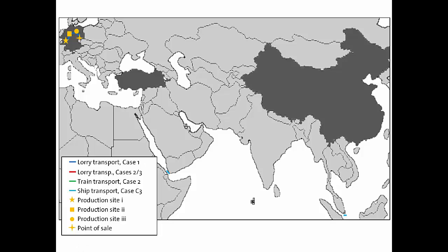In case two, the life cycle begins in China with granulate production. These granulates are transported by train to Turkey, where the plastic granulates are made into plastic components, and the bottle is filled with water. The filled water bottle is then transported to Germany. In case three, the plastic granulate production is also in China — this time in eastern China — transported by ship to Turkey, filled with water, and the full bottle is once again transported to Germany.